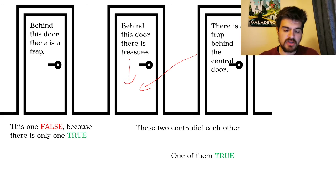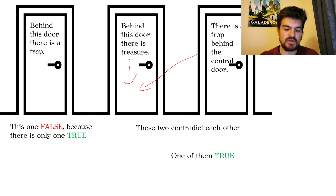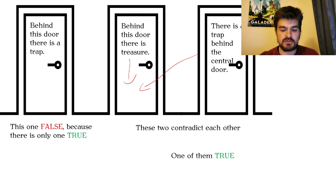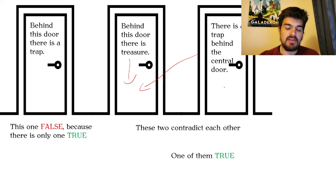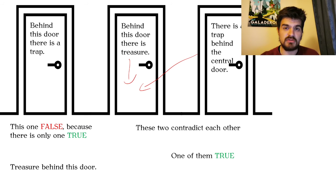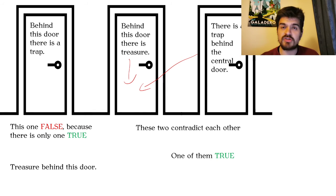But because there is at most one true statement among all three, and we know that the true one is either the second or the third statement, the first one must be false. Because there are either three false statements — which we know is not the case since one of the two is true — or two false statements and one true. The true one is either of those two, and the first one is the false one. So if the first statement is false, that means the treasure is here. It says there's a trap here, we know it's not the case, so there must be a treasure here.